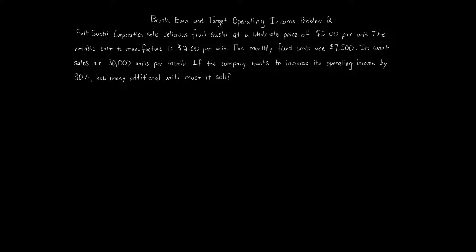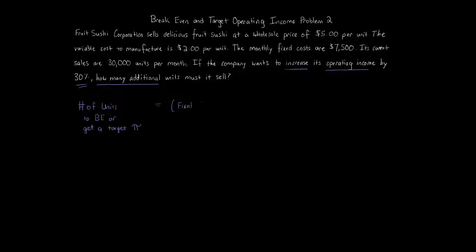This is a target profit increase in operating income question, specifically focusing on if the company is to increase its operating income by 30% — so increase by a percentage — how many additional units must it sell? The first formula we're going to look at is the number of units to break-even or get a target profit, denoted by pi. That formula is fixed costs plus the target profit — which here is 30% of operating income — divided by the contribution margin per unit.